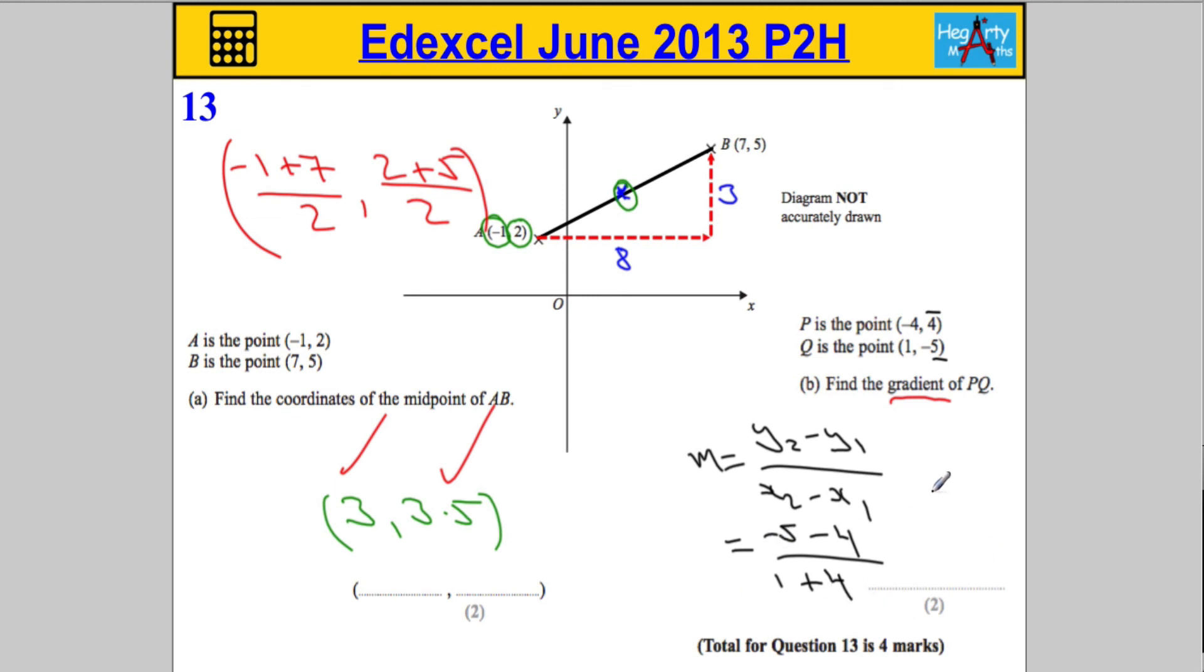When we tidy up that, we're going to end up with negative 5 subtract 4 is negative 9. And 1 plus 4 is 5. So the gradient must be negative 9 over 5, or if you wanted, you could say it's negative 1.8.